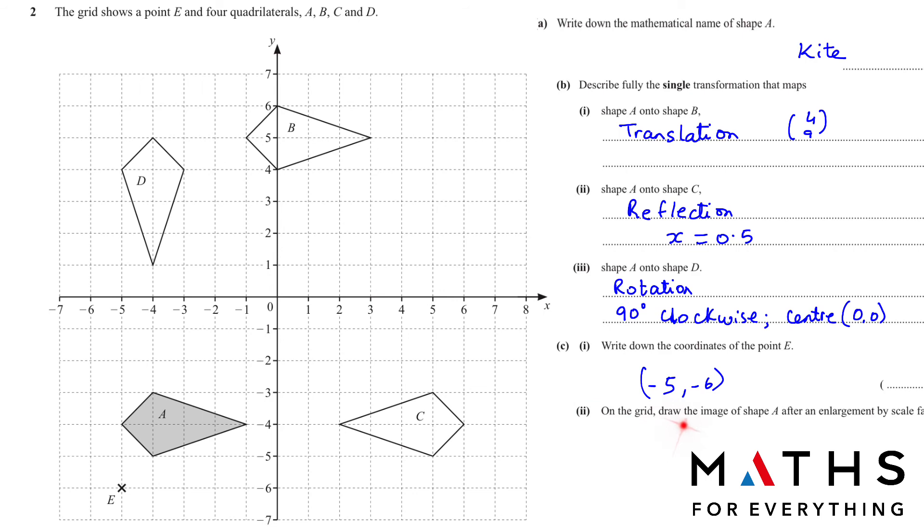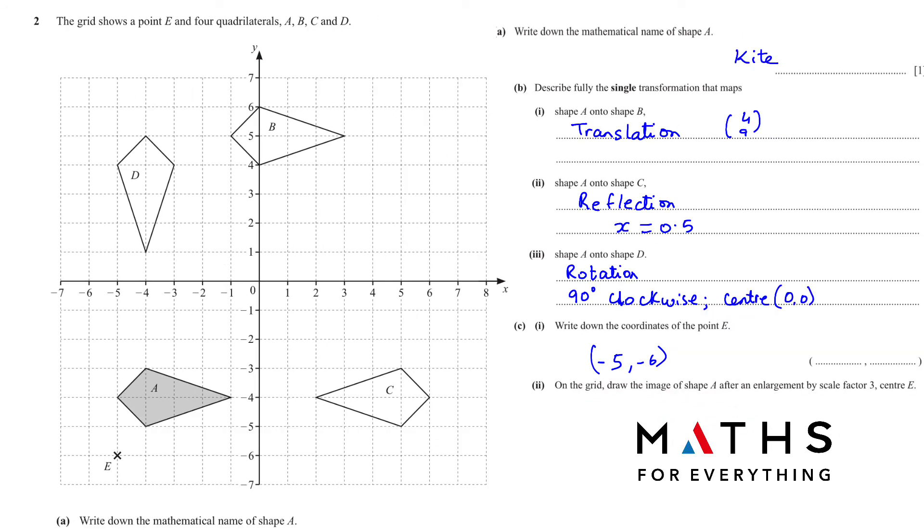C2, on the grid, draw the image of shape A after an enlargement of scale factor 3, center E. So from A, we will draw at least three vertices, any three vertices and join them by a line. I joined one. Now I will join with this vertex. When you are joining, see that it passes through the squares like that. So you be careful with that part. So this is how we joined all the four vertices to point E. Now the scale factor is 3. We count this number of squares from each vertex to E. We got 2 here. So 2 multiplied by 3 is 6. So 2, 3, 4, 5, 6. Make a point here.